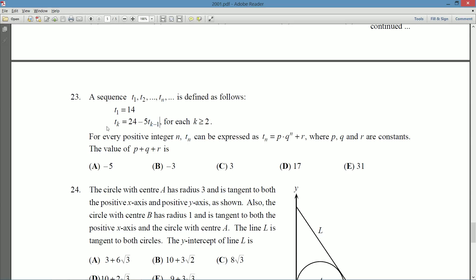So we get the previous number gives us our new number here. For every positive integer n, Tn can be expressed as Tn equals p times q to the n plus r, where p, q, and r are constants. What is the value of p plus q plus r?